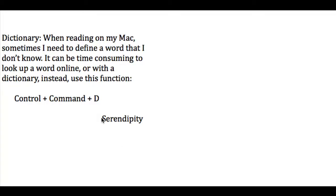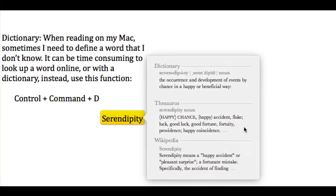I'm going to go ahead and highlight the word serendipity right here. And to get to the dictionary, I will press Control, Command, and D. So, you'll see the window pop up and you'll see the dictionary in which the word is defined as the occurrence and development of events by chance in a happy or beneficial way. And then there's also a thesaurus as well as the Wikipedia.